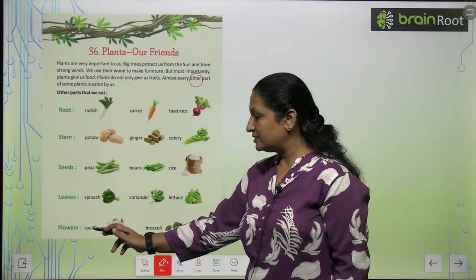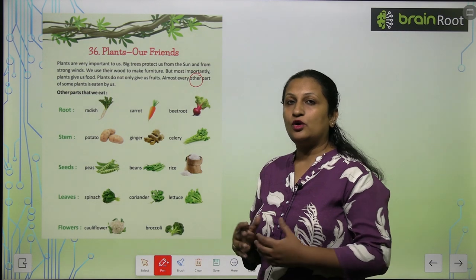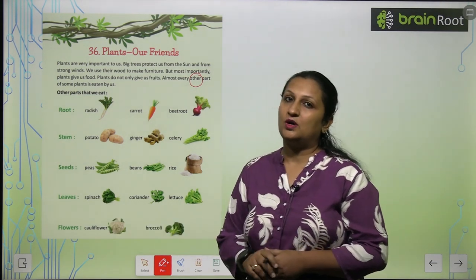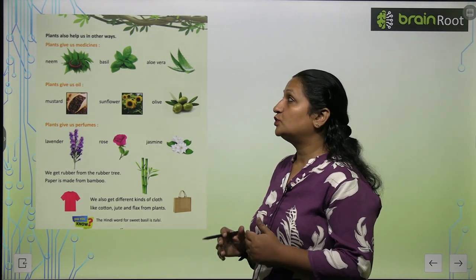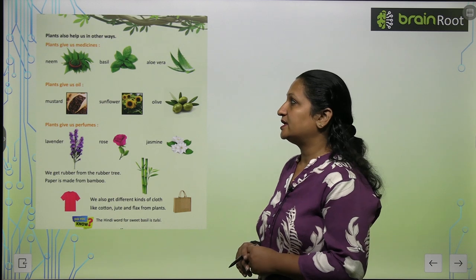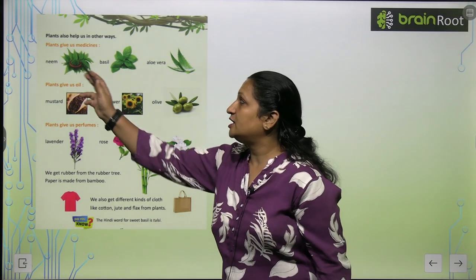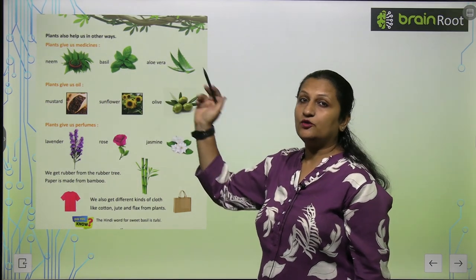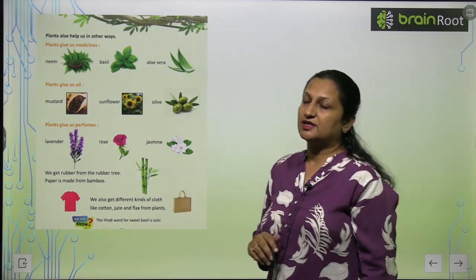Then flowers — we can also eat flowers. Cauliflower and broccoli are flowers that we consume. Plants also help us in other ways. Plants give us medicines. Plants like neem, basil (which means tulsi), and aloe vera — we can use all of these as medicine.